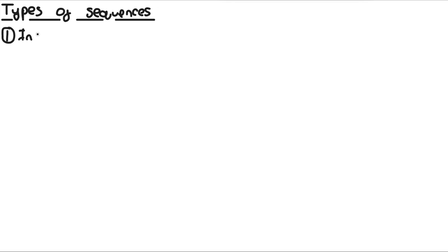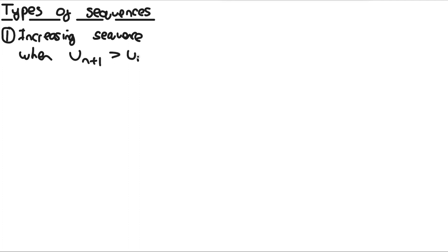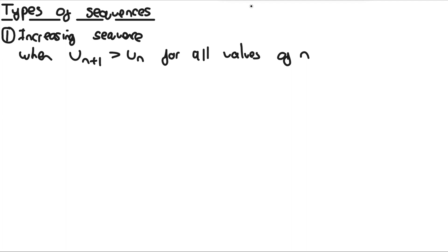The first type is an increasing sequence. This is when the terms keep getting bigger and bigger. More formally: u(n+1) > u_n for all values of n (meaning all natural numbers, i.e., positive integers 1, 2, 3, etc., since n can't be a half). For example, u_n = 2n gives the sequence 2, 4, 6, 8, 10, ... — an arithmetic and also increasing sequence since each term is bigger than the last.